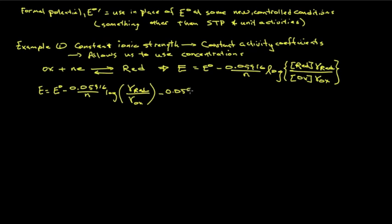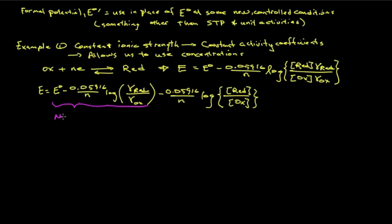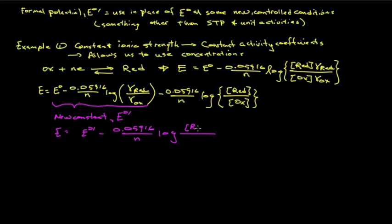We rewrite this as: the potential equals E0 minus 0.05916 over N electrons times the log of the ratio of the activity coefficients, and then minus 0.05916 over N times the log of just the concentrations of products over reactants. This grouped term is a new constant — a new formal potential associated with these conditions — so that we can apply concentrations directly in our calculations for the potential of the system.